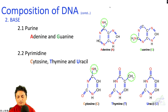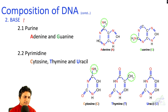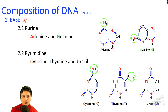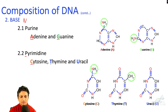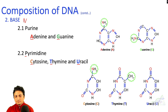The second component of DNA is the nitrogenous base, which contains nitrogen. There are two different kinds of nitrogenous bases: purines and pyrimidines. Purines include adenine and guanine, while pyrimidines include cytosine, thymine, and uracil. Thymine is present in DNA while uracil is present in RNA.